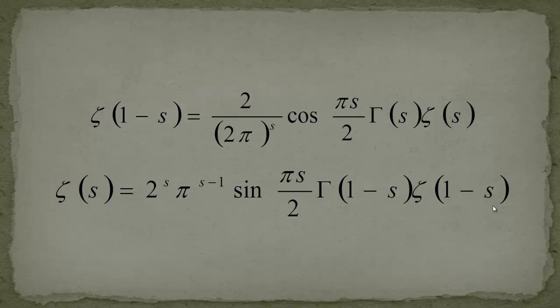The next two videos will be about the trivial zeros of the zeta function, which are pretty easy to see from this formula. After that, I'll talk about Riemann's xi function, and we'll come even closer to the Riemann hypothesis — you'll see where it arises from these equations.